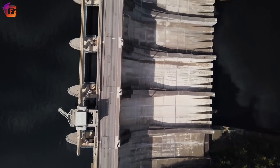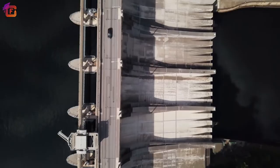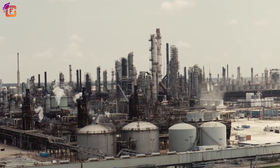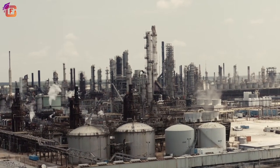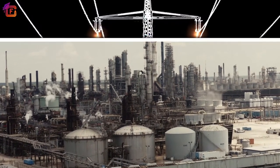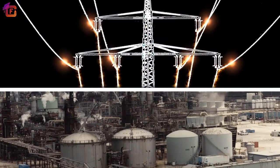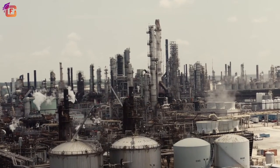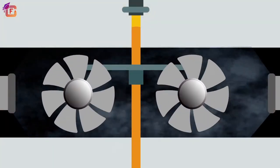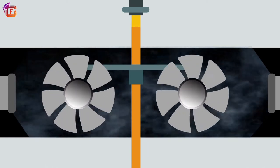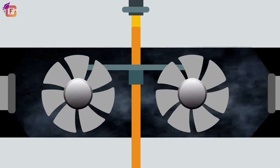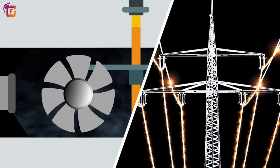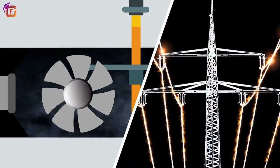Water is also used to generate electricity. In thermal power plants, water is boiled to produce steam which in turn generates electricity. In hydroelectric power plants, falling water rotates turbine blades which spin a generator that converts mechanical energy into electrical energy.